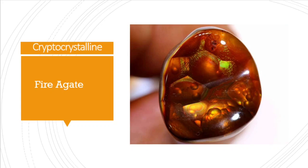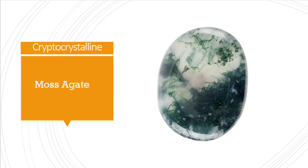The second one is fire agate. The main difference between agate and fire agate is the reddish iridescence in the fire agate, as you can see here. Then moss agate — a translucent or colorless chalcedony with dendritic inclusions, or tree-like inclusions, which produce the moss agate appearance.